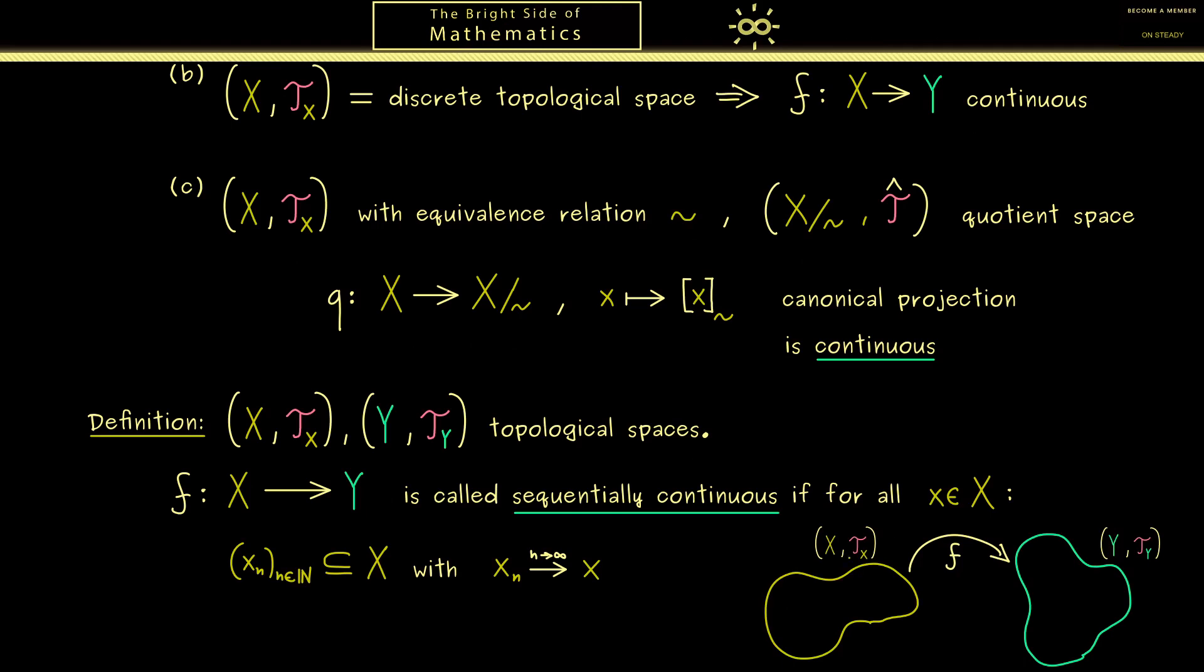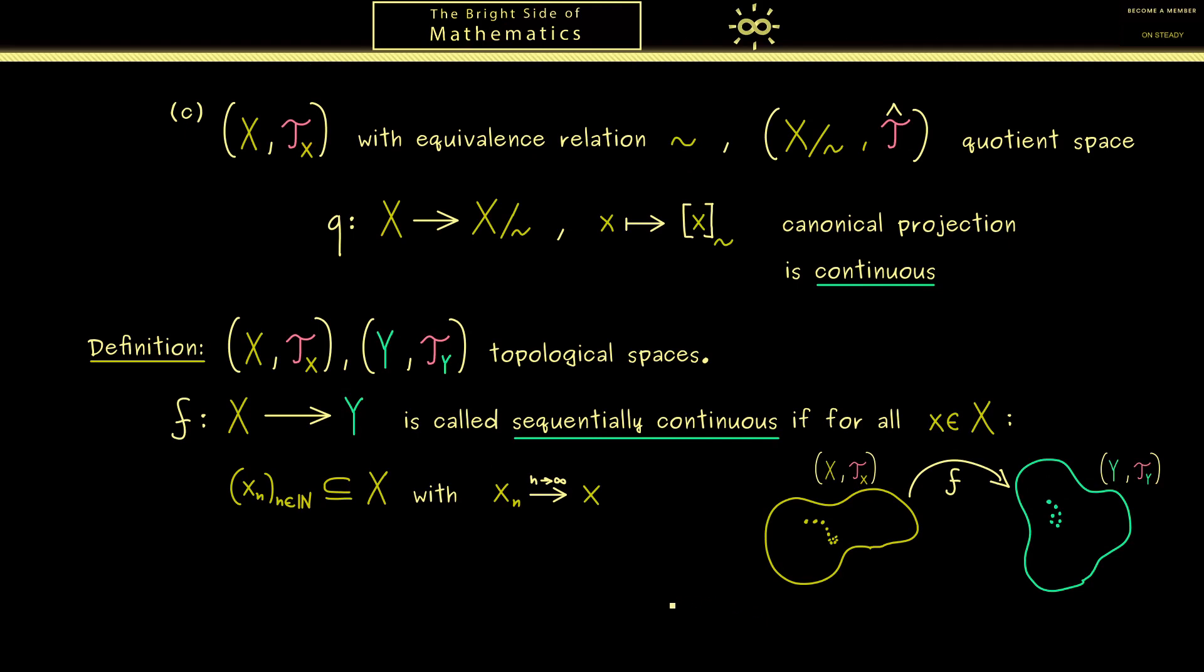Now if we take the visualization from above, the sequence x_n now lives here on the left hand side. And by using the map f we can map it to the right hand side. And there we know we want that the sequence on the right hand side is also convergent.